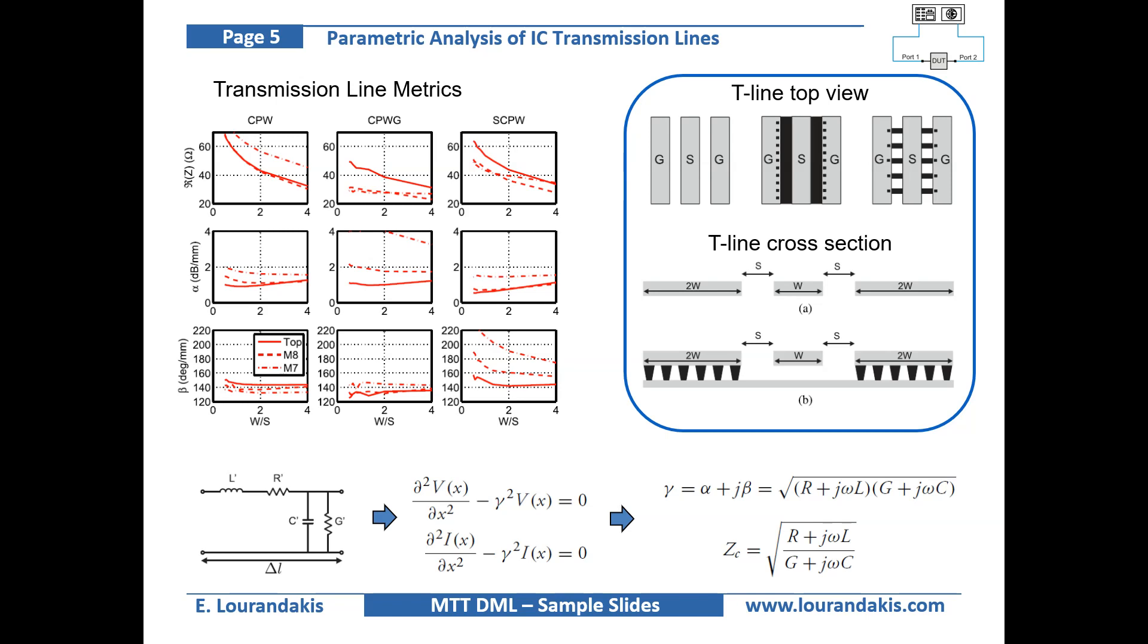The most common metrics for transmission lines are the characteristic impedance Z, the attenuation constant alpha and phase constant beta. Here by simple graph analysis we can show how these transmission line metrics are varied by the circuit elements R, L, C and G.